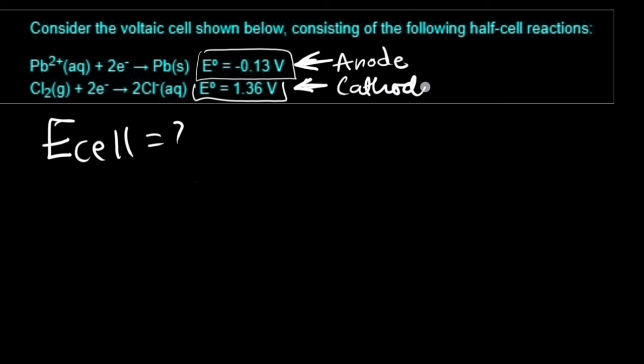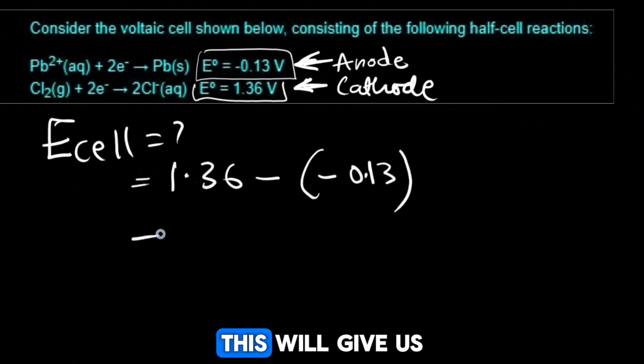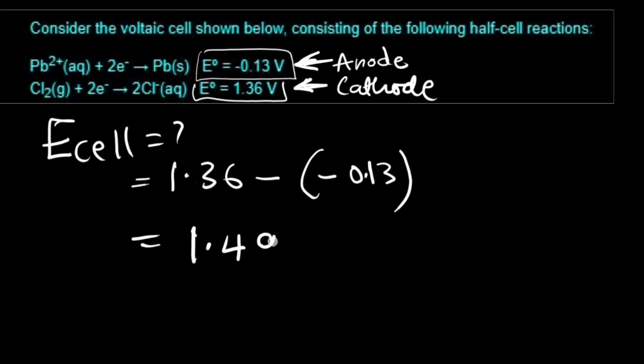Let us calculate it. We will take the one in the cathode and subtract it by the one in the anode. This will give us the cell potential as 1.49 volts. Now that we know that the electrons will flow from lead to chlorine, how can we write the equation?